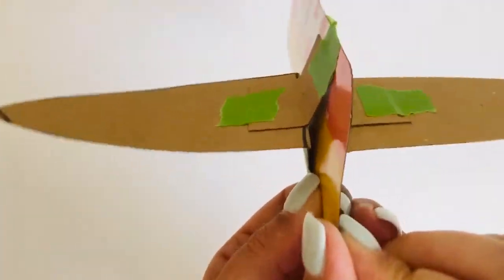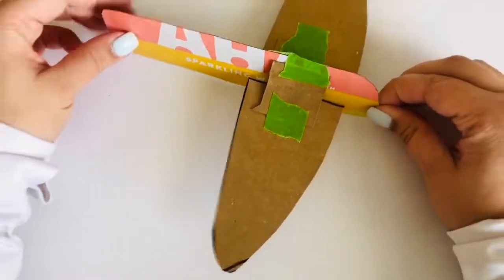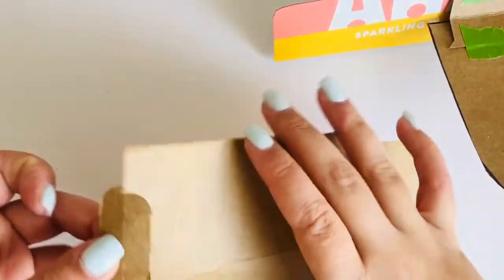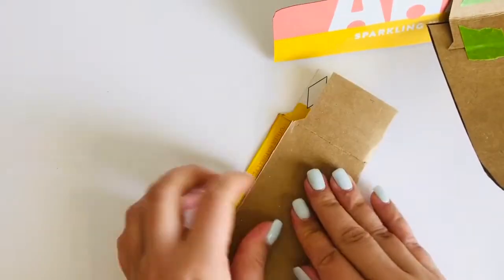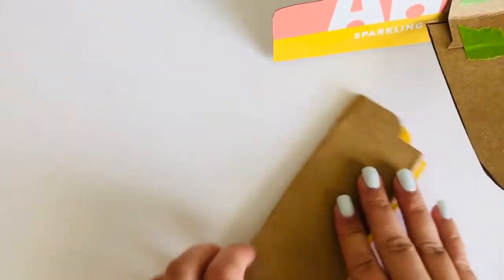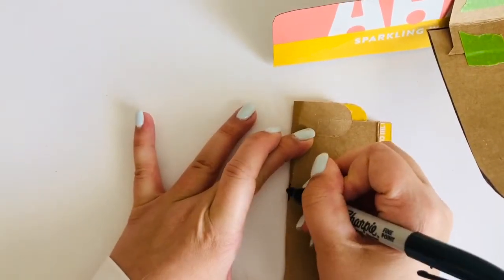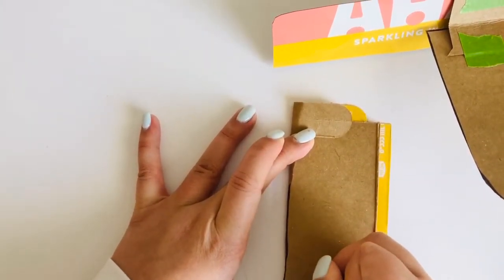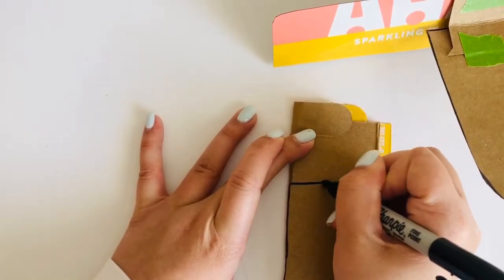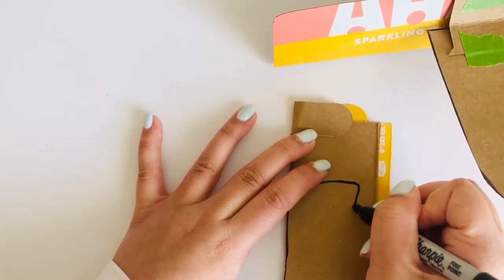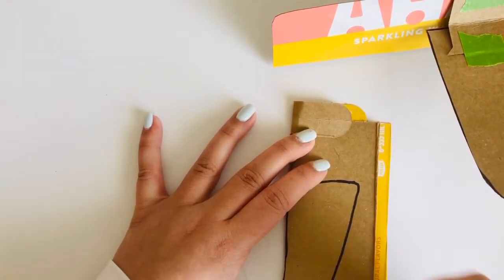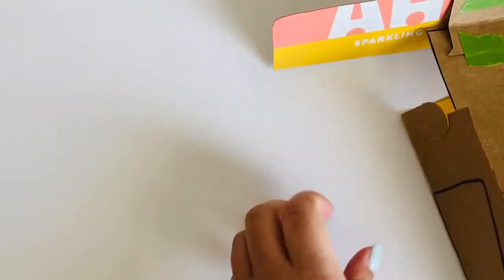Now that both wings are attached, we are ready to make the horizontal stabilizer. Again, take another piece of cardboard and fold it in half. Draw once, cut once, to make two of the same things. Use the edge to draw a curved trapezoid. Sorry, the video got a little bit cut off but you'll be able to see my finished piece in just a second.